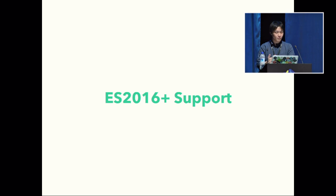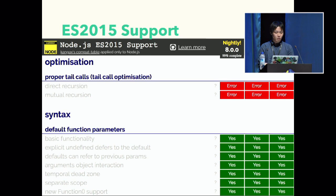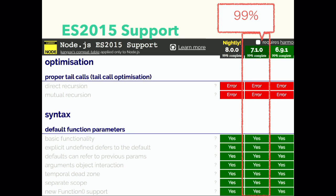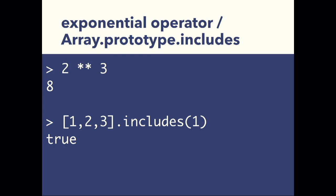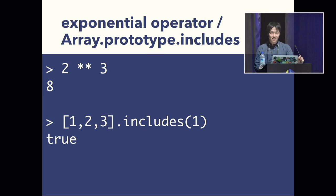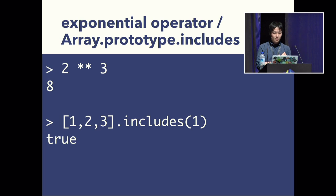I'll introduce ES 2016+ support. Here is a compatibility table — you can see Node.js highlighted in green. Node.js v7.1.0 achieves 99% support for ES 2015, and for ES 2016, we achieve 100% support. ES 2016 has two representative features: the first is the exponential operator — two asterisks, so 2**3 becomes 8. The second is Array.prototype.includes, which is similar to indexOf but returns a boolean. Node.js v7 supports both features natively.